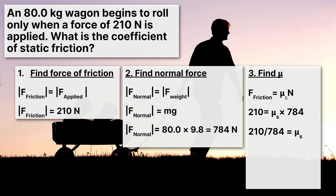When we divide 210 by 784, we get 0.267 and further decimal places. Rounding for significant figures — we were given 80.0 kilograms, which has three sig figs, and 210 newtons, which has two sig figs. We take the lesser of those two, which is two sig figs, and round to 0.27. The 6 rounds up because the 7 is greater than 5. So the coefficient of static friction is 0.27.